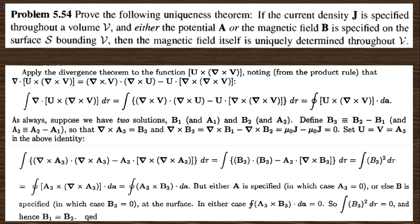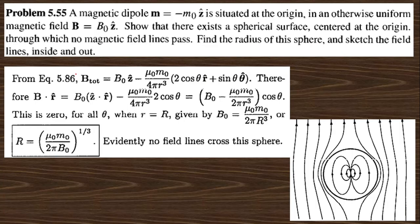The next question also involves using this equation to find a relation. Question 5.54 states: a magnetic dipole moment is situated at the origin in another magnetic field. There exists a spherical surface centered at the origin through which no magnetic lines of force pass. Find the radius of that sphere. The total magnetic field from equation 5 is written out; B dot r-hat equals zero for all theta when r equals R, which gives the radius — this is where the net magnetic field produces no lines of force through the sphere.